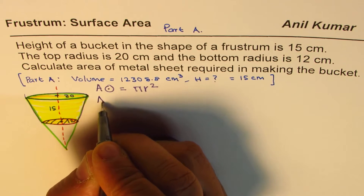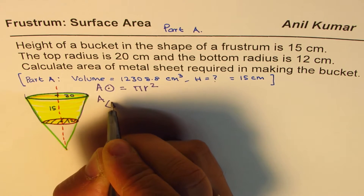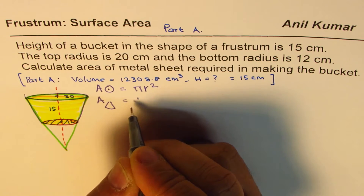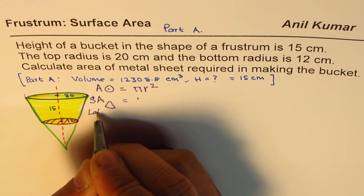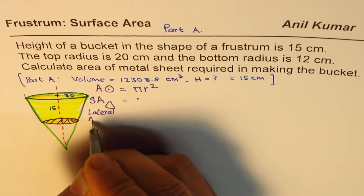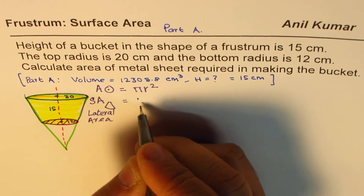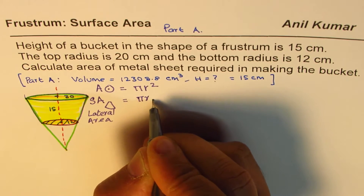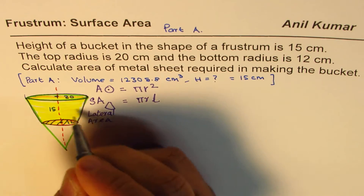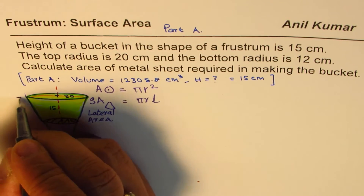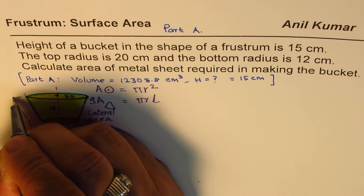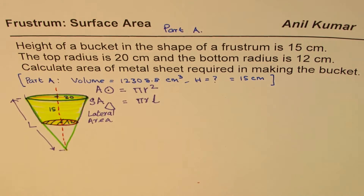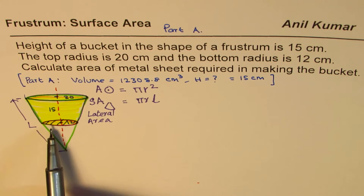And the area of a cone — I should say the surface area, or lateral area of a cone — is πrL, where L is the slant length of the cone. We'll need these formulas to find the total surface area, which includes the lateral area and the bottom area.